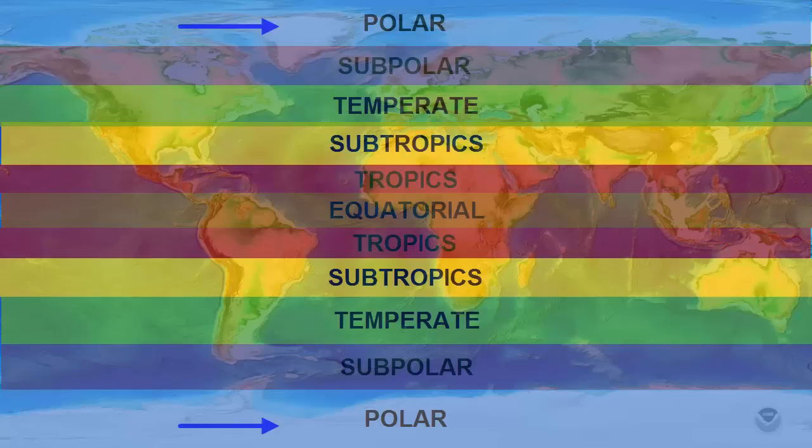The northernmost zone near the poles are referred to as the polar regions. Just below the poles, we have the subpolar regions. Moving to the equator, we have the equatorial zone that runs between the two hemispheres.